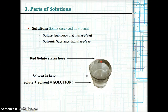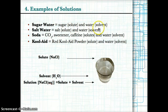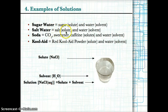Think of solute as the thing that goes in and is dissolved — such as powder — and solvent as the substance that actually does the dissolving, such as water. Usually the solvent will be water, and the solute will be something powdery or something that actually dissolves in the solvent. For example, in sugar water, sugar is the solute and water is the solvent. In salt water, salt (NaCl) is the solute and water (H₂O) is the solvent.